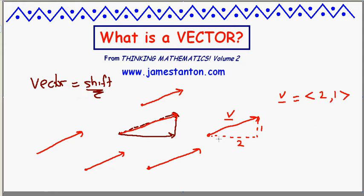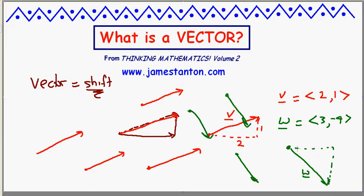If I was to draw a second vector, maybe I'll do it in green, I might call it W. I might have the vector say, three, negative four. What does that mean? That means every point in town's shifted three units to the right and four units down. That's all a vector is. Nothing more than that.